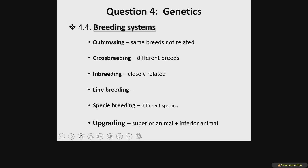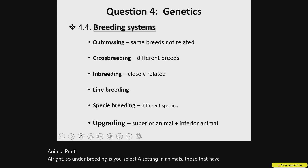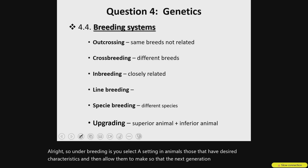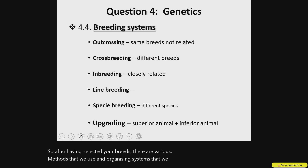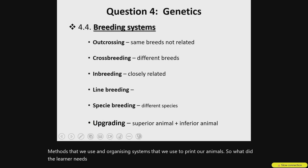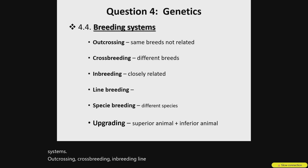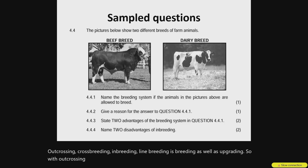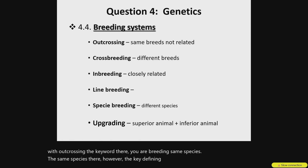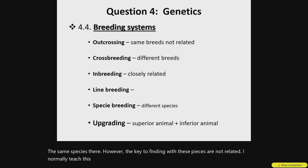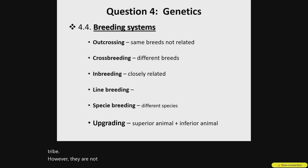Under breeding, it's where you select certain animals — those that have desired characteristics — and then you allow them to mate so that the next generation can perform better. There are various breeding systems. The learner needs the key defining words. Out-crossing: the key word is you are breeding the same species, however these species are not related. I teach this using human tribes — it's like the same species, same tribe, but they are not related. That is called out-crossing.